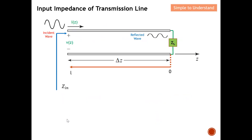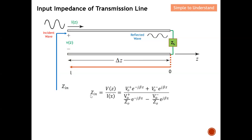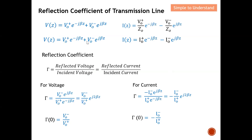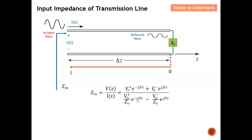Now let's find the input impedance of the transmission line. The input impedance is what we see looking into the line from the source side. To obtain Z_in, I take the voltage V(z) divided by the current I(z) — this is essentially Ohm's law. I put together the two expressions for voltage and current that I've been using throughout this discussion.